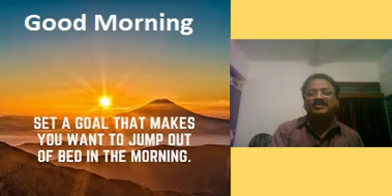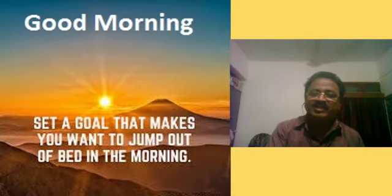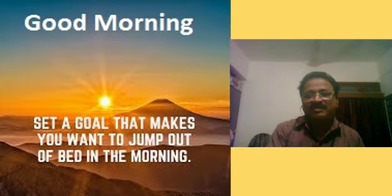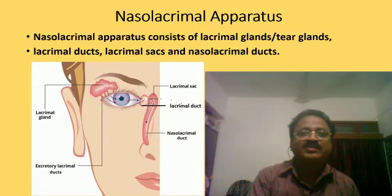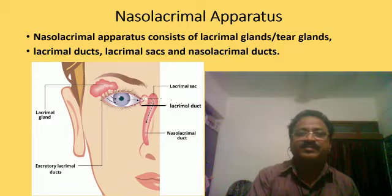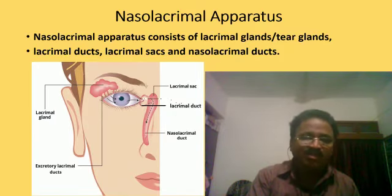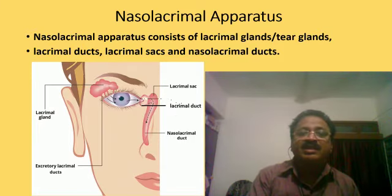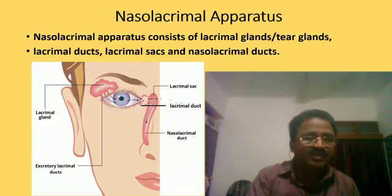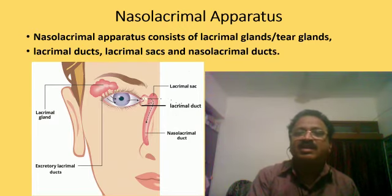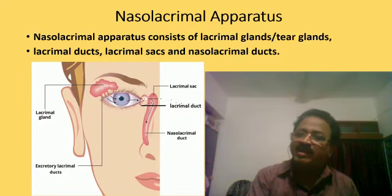Good morning dear students. Today we will study some more parts of the eye. The nasolacrimal apparatus consists of lacrimal glands or tear glands, lacrimal ducts, lacrimal sacs, and the nasolacrimal duct.